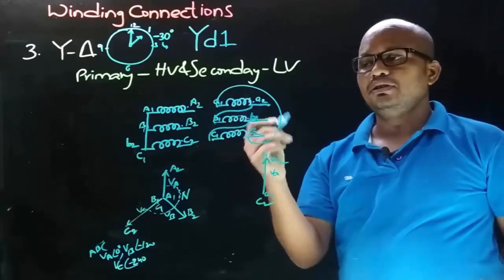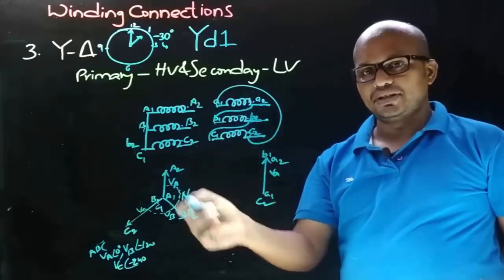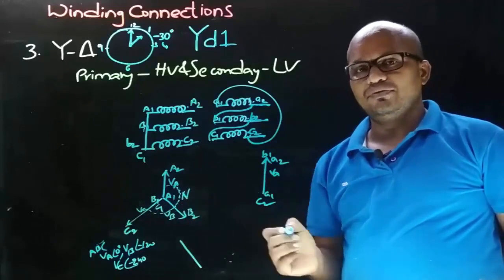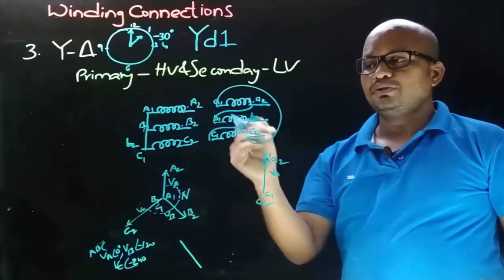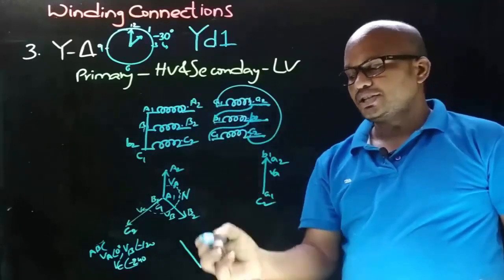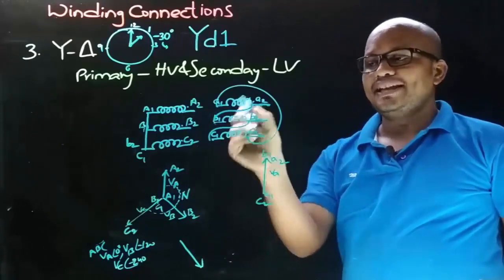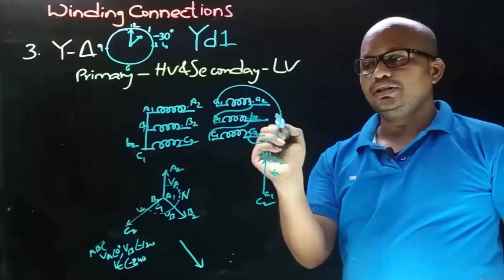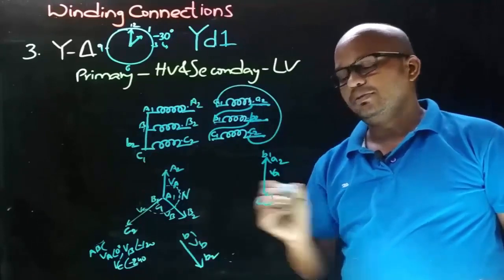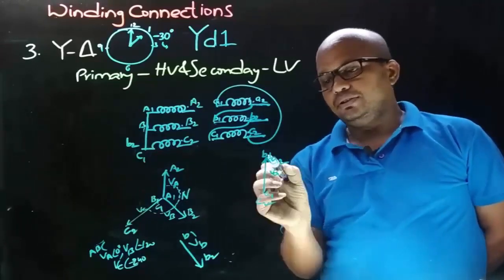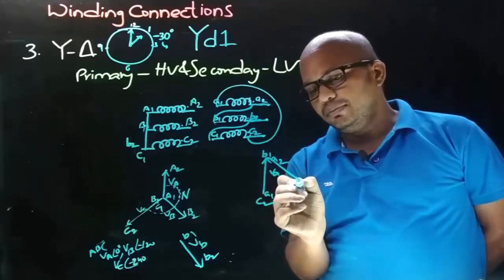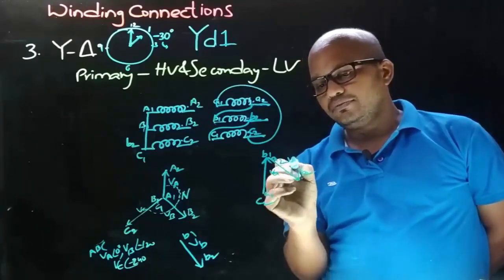Now let's draw the secondary side VB phasor parallel to the primary side VB phasor. As connections on both sides are taken from dot ends, the direction is the same. As b2 is the connection taken from, the arrow points towards b2 and the other end is b1. Coming to the phasor diagram, this end is having the b1 terminal, so VB phasor is drawn accordingly. This is the VB phasor.